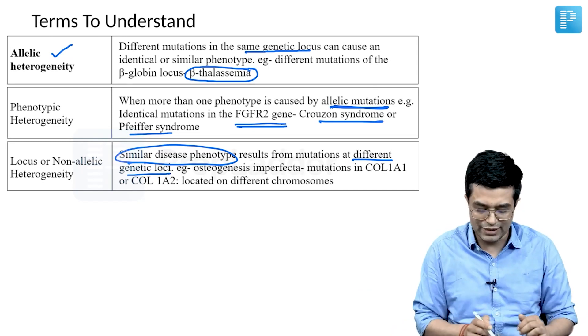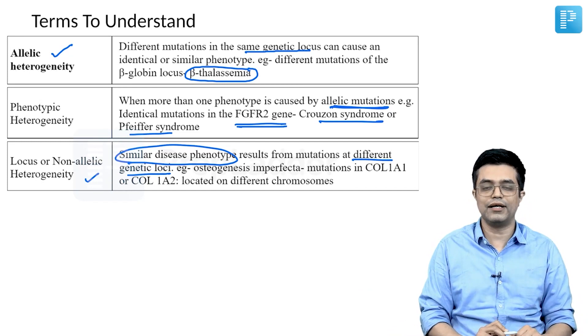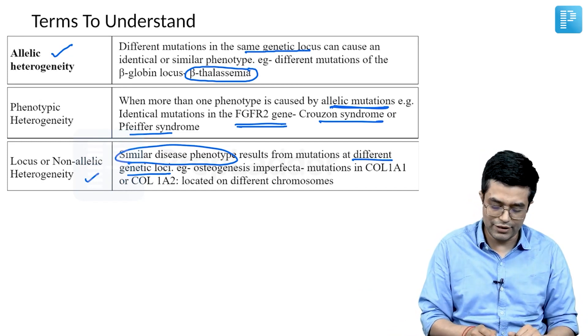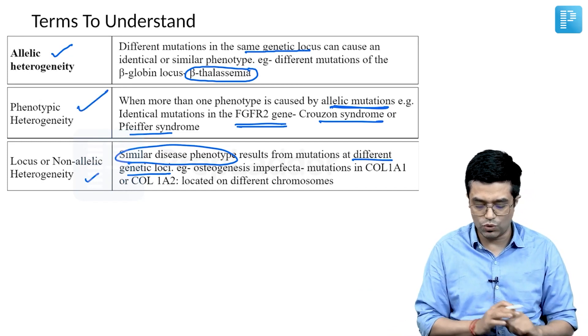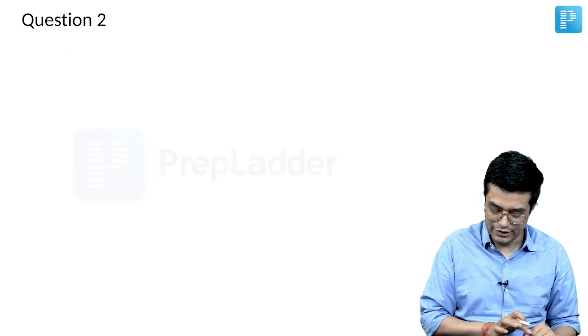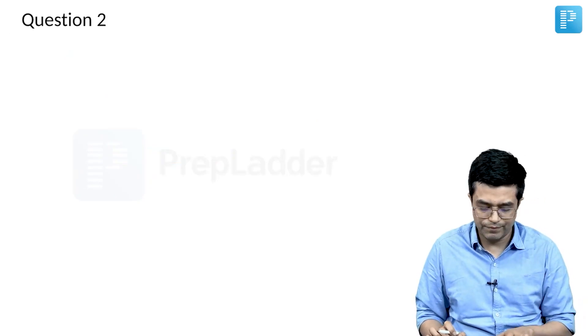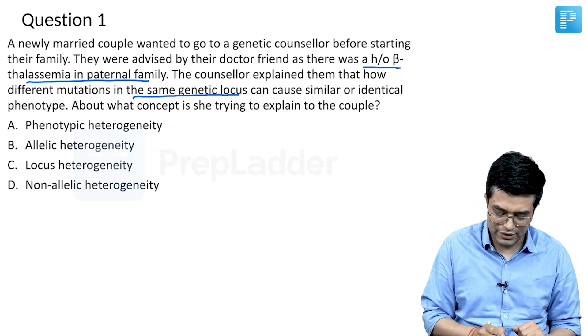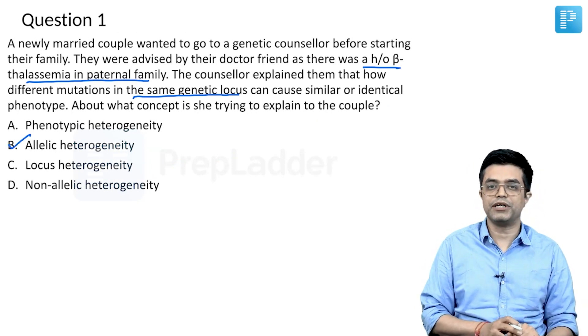So we have allelic heterogeneity, phenotypic heterogeneity, and locus or non-allelic heterogeneity. The answer to question number one should be very clear to you - it is allelic heterogeneity which is being talked about.